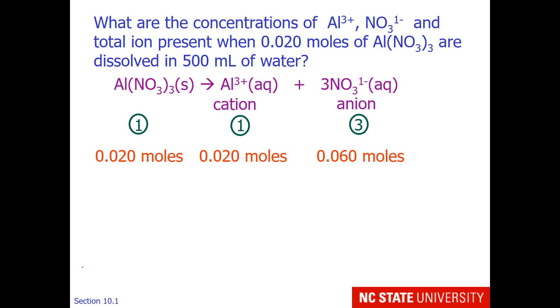So if I begin with 0.02 moles of aluminum nitrate, when it dissolves I'll have 0.02 moles of aluminum 3 plus cation and 3 times or 0.06 moles of nitrate anion. If I divide by the volume, which is 500 mL or 0.5 L, the volume isn't going to change upon dissolution.